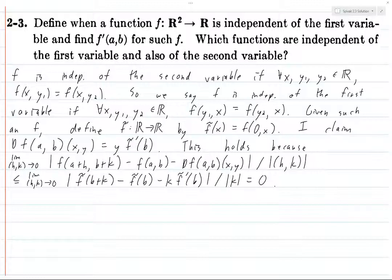Okay, so now we have a formula for the derivative of a function which is independent of the first variable. But then which functions are independent of both variables? Well, if it doesn't depend on the variable, it has to be constant.